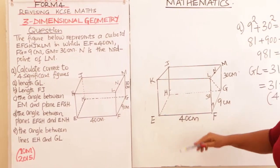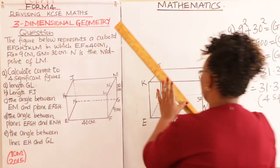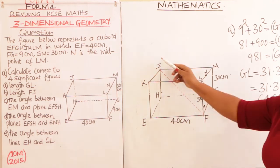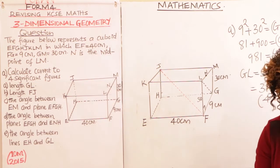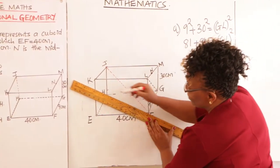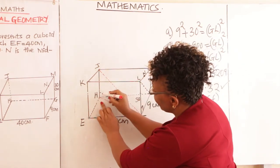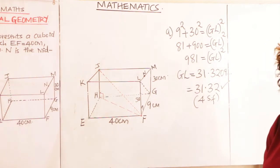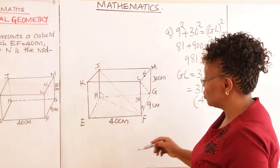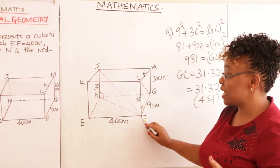Part B asks for FJ. FJ is a diagonal that goes through the interior of the cuboid. To find it, we introduce a diagonal on the base. This forms a right-angle triangle where the height of the cuboid is one side, the base diagonal FH is another side, and FJ is the hypotenuse. We need to first find FH, the diagonal of the base.